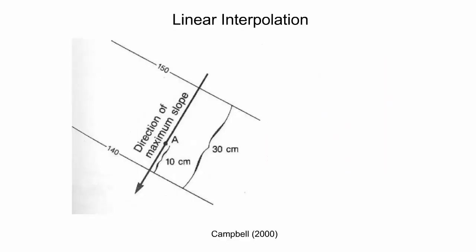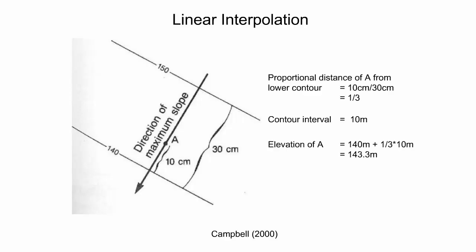When a point lies in between two contour lines, linear interpolation is used to estimate its elevation. Linear interpolation is only possible under the assumption that the slope is constant between the two contours. To perform linear interpolation, the proportional distance from the point to the lowest contour must be measured. Then, the proportional distance is multiplied by the interval and added to the lowest elevation contour.